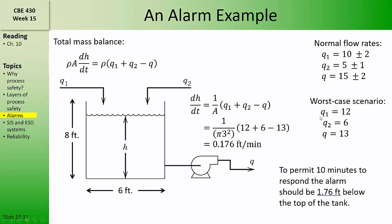Q1 and Q2 are at their maximum flow rates, while Q is at its minimum flow rate. That would result in the largest rate of accumulation of fluid in the tank.